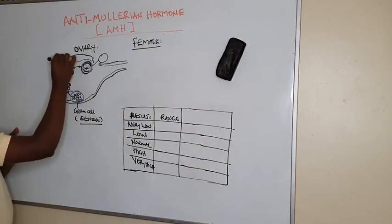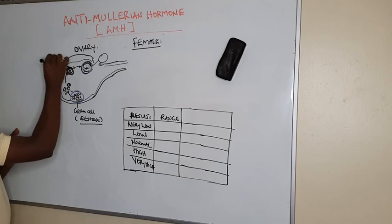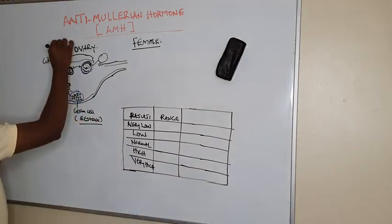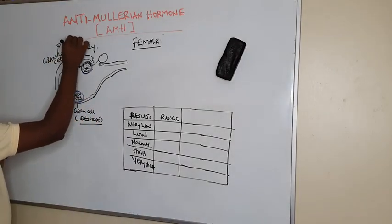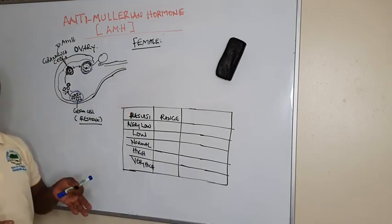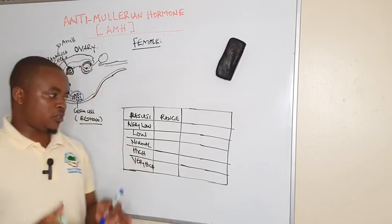These cells have what we call granulosa cells, and these granulosa cells which are maturing on the maturing ovary are the ones producing anti-mullerian hormone, which we are abbreviating as AMH. The more cells continue to mature, the more the anti-mullerian hormone increases.